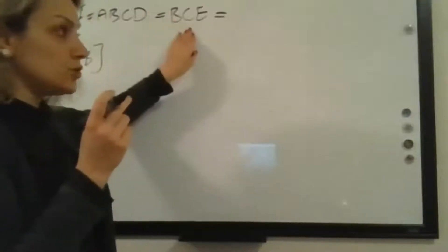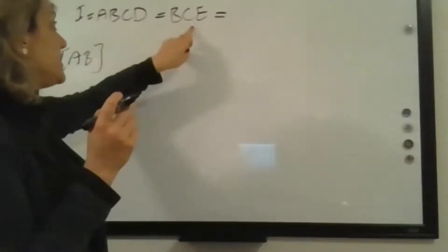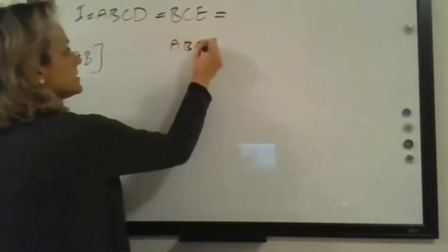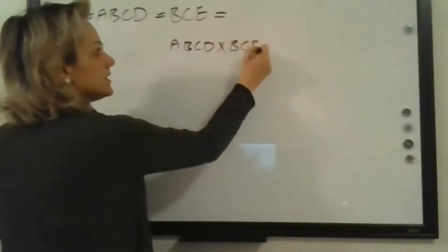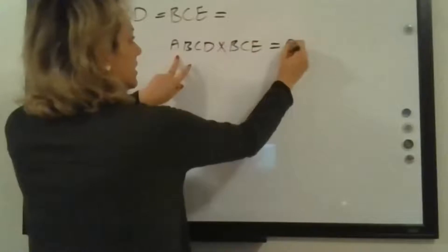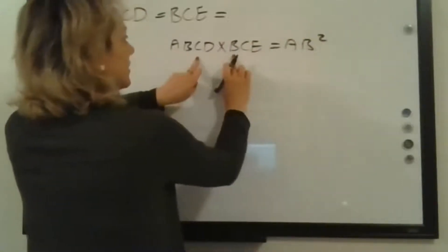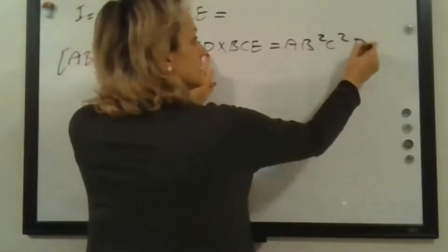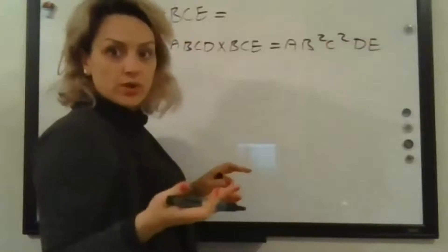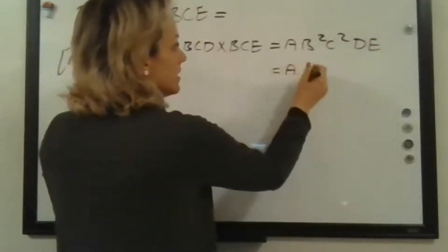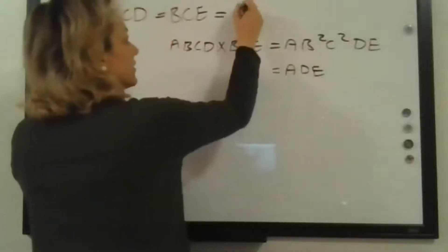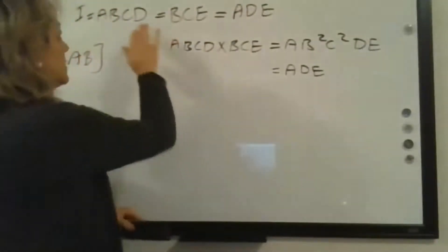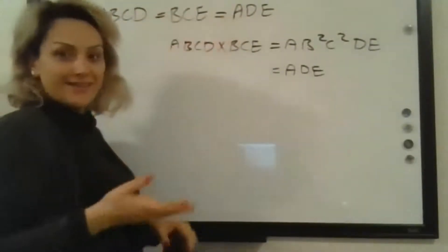For the next defining relation, we multiply the two together: ABCD times BCE. We get A, B-squared, C-squared, D, E. Since B-squared and C-squared equal one, this simplifies to ADE. So the defining relation has three terms: ABCD, BCE, and ADE.